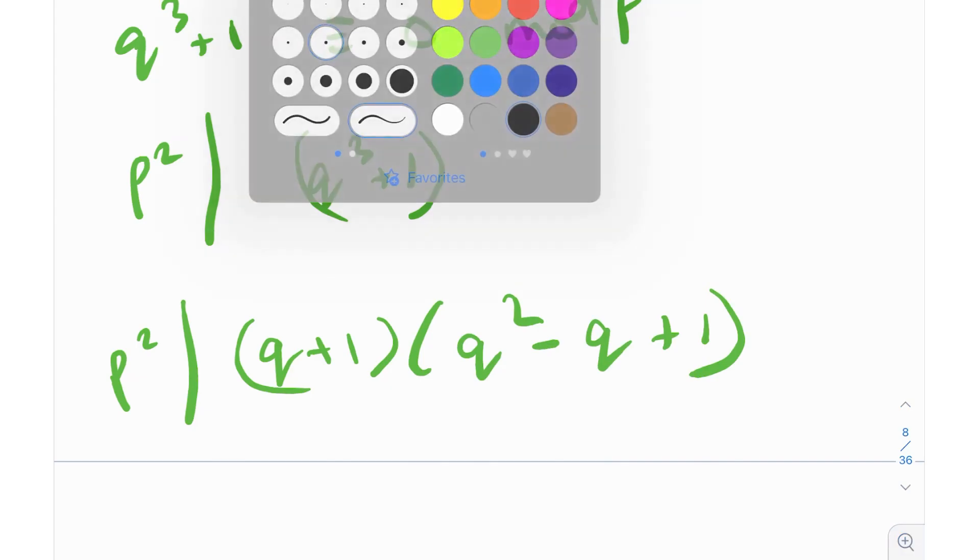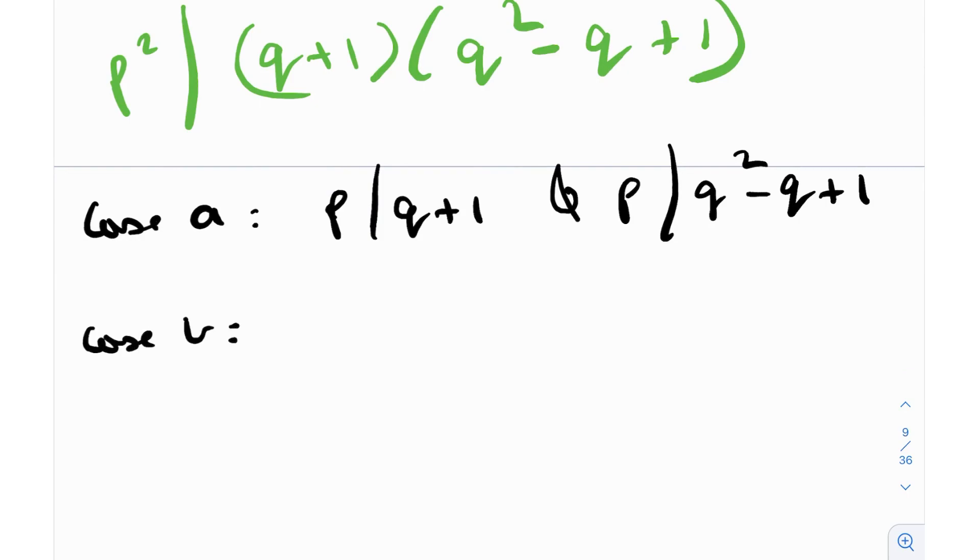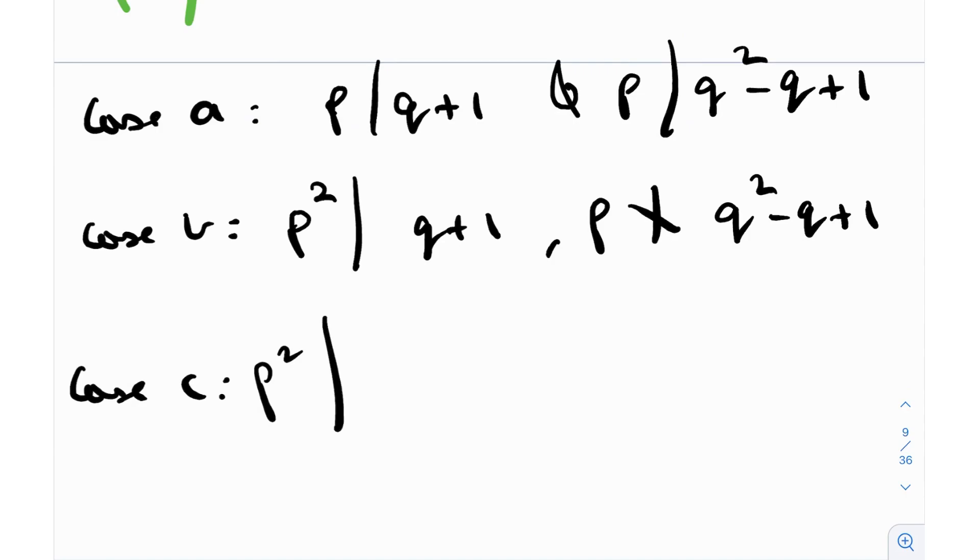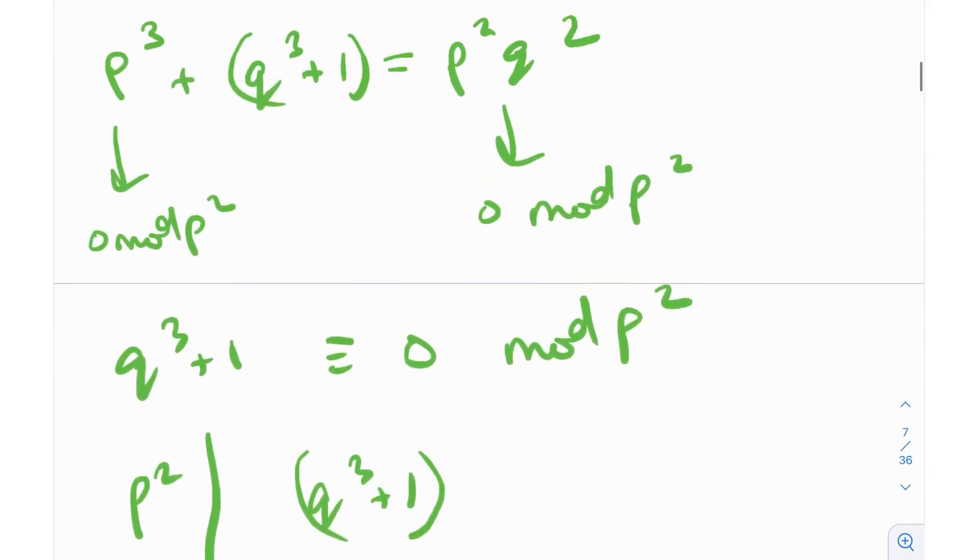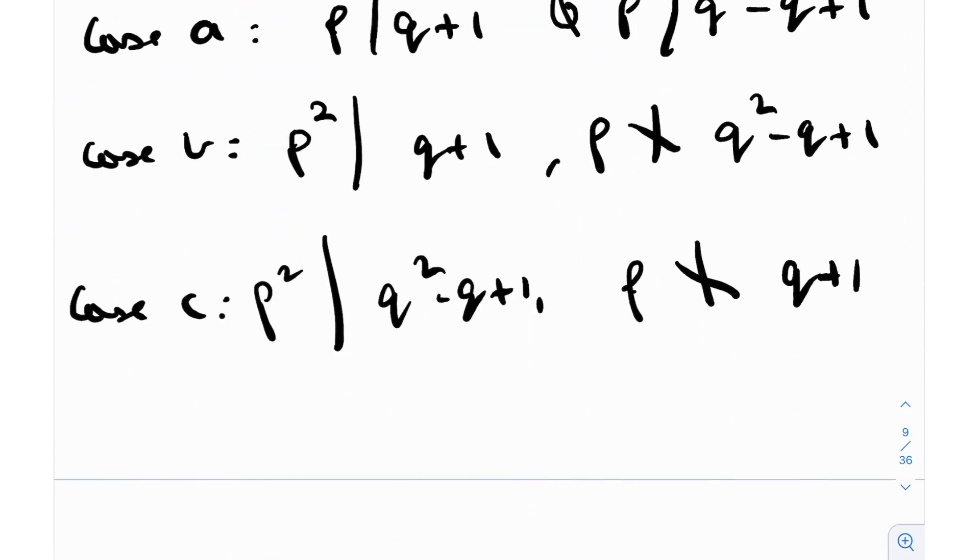I can very conveniently split this up into three cases. Case A would be that p divides q + 1 and p also divides q^2 - q + 1. Case B would be where p^2 divides q + 1, but p does not divide q^2 - q + 1. Case C would be where p^2 divides q^2 - q + 1 and p does not divide q + 1. These are sub-cases within case two where p is not equal to q. Let's take these cases one by one.